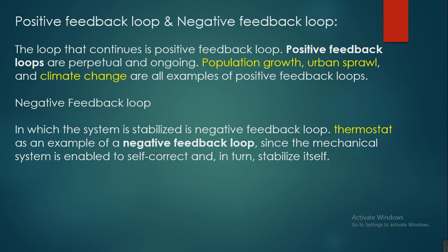Within system thinking, there are positive feedback loops and negative feedback loops. Positive feedback loops are perpetual and ongoing — population growth, urban sprawl, and climate change are all examples of positive feedback loops.